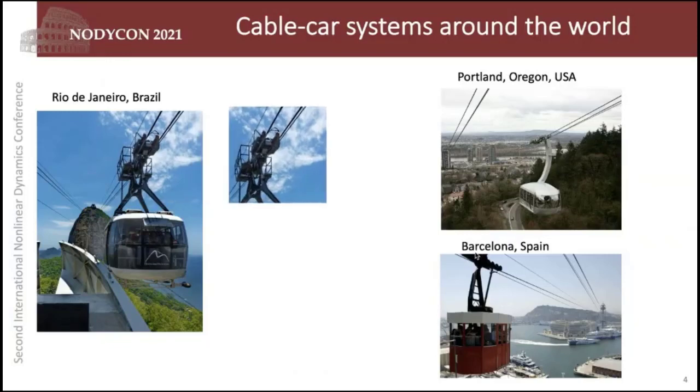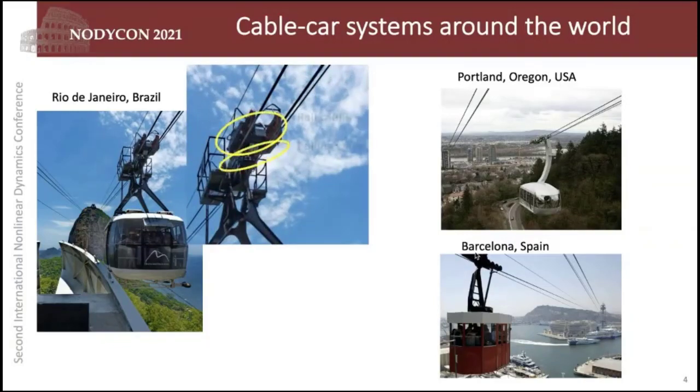A typical cable car system should be called a two cable car system because it has two cables. One for supporting purposes and another one for pulling the cable, as you can see here in this picture.